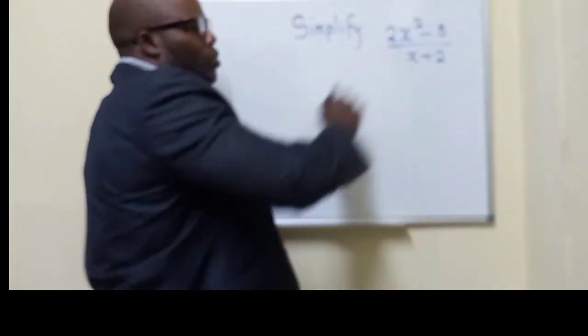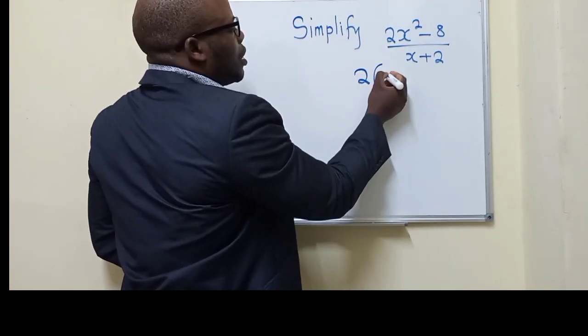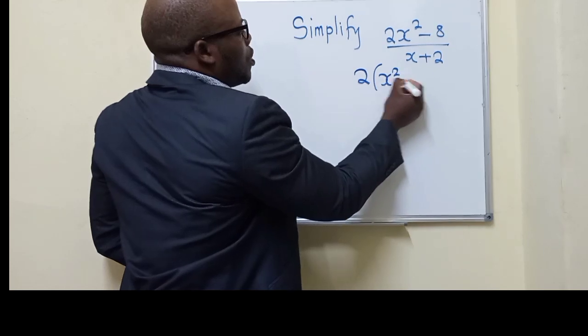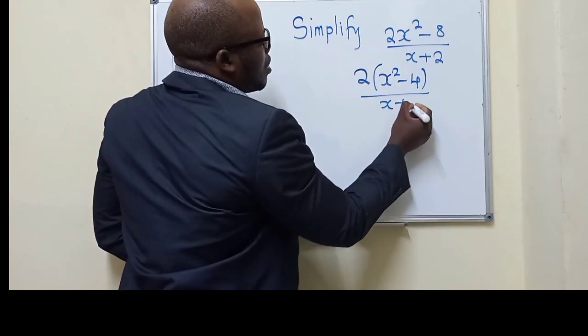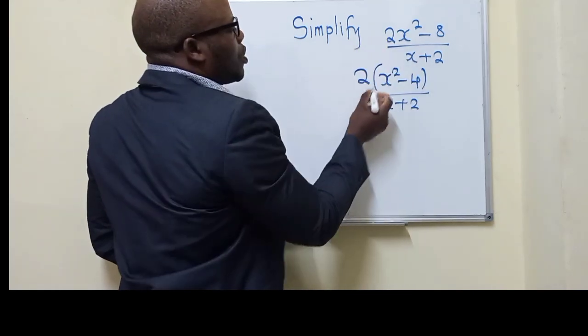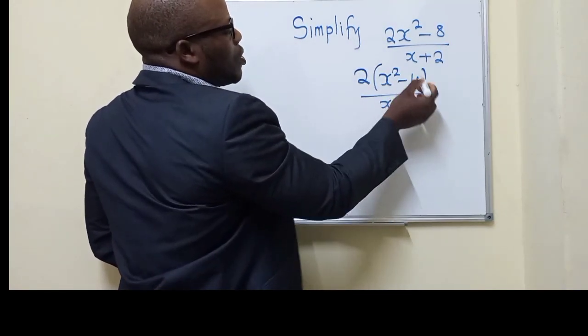All right, so to simplify this question, all you need to do first is to factor out 2. So check what we have. 2 is outside, 2 in 2 negative 8 is negative 4. So this is what we have.